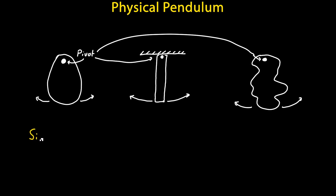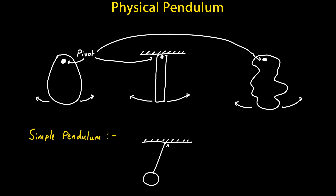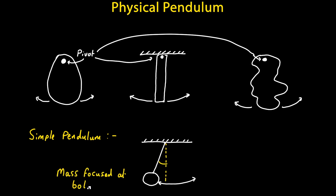Now these must not be confused with the ideal or simple pendulums. I've discussed these types of pendulums in a previous lesson. An ideal or simple pendulum has all their mass concentrated at the bottom. But physical pendulums are different — their mass is spread out over the pendulum's volume.